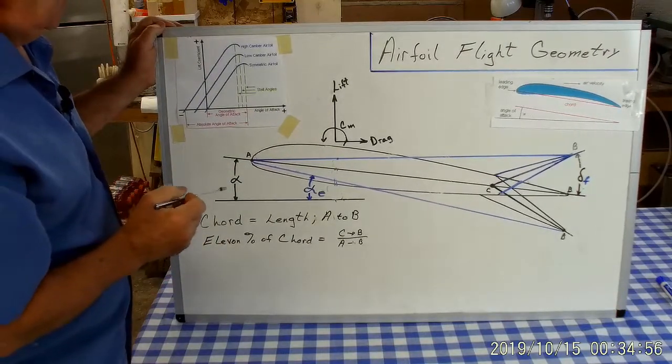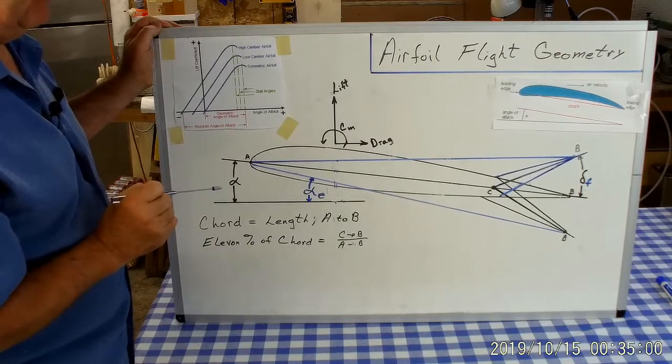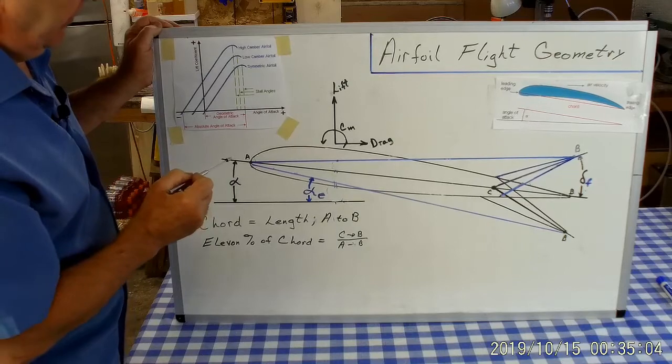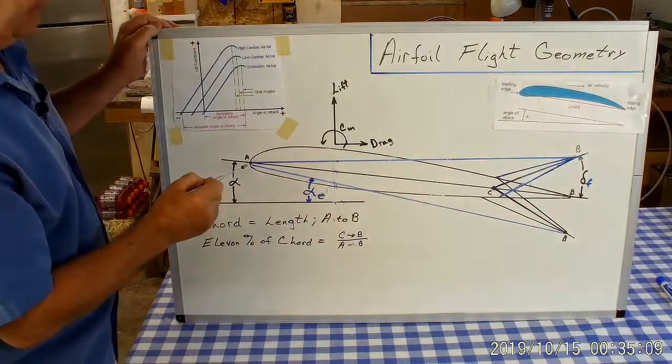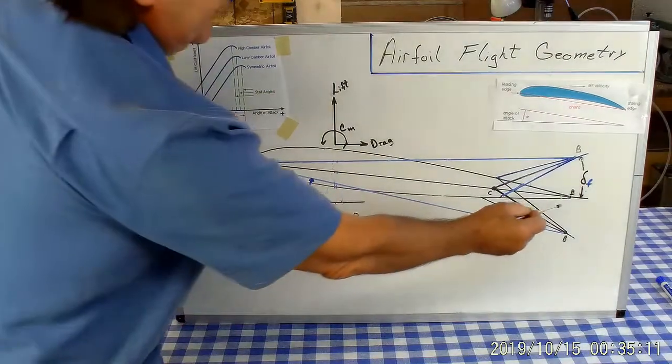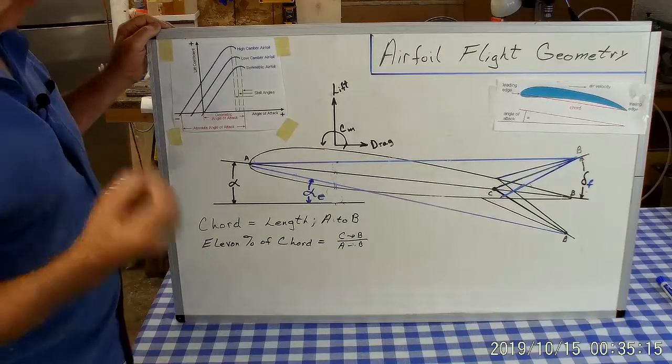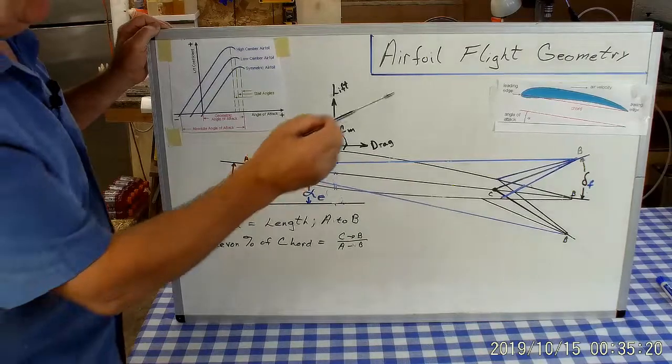What we're most interested in is the cord line of the airfoil and the camber that's in the airfoil. The cord line of an airfoil runs from a to b—it's the point furthest forward on the airfoil to the point furthest aft on the airfoil. That is the cord line for that airfoil with an undeflected flap.